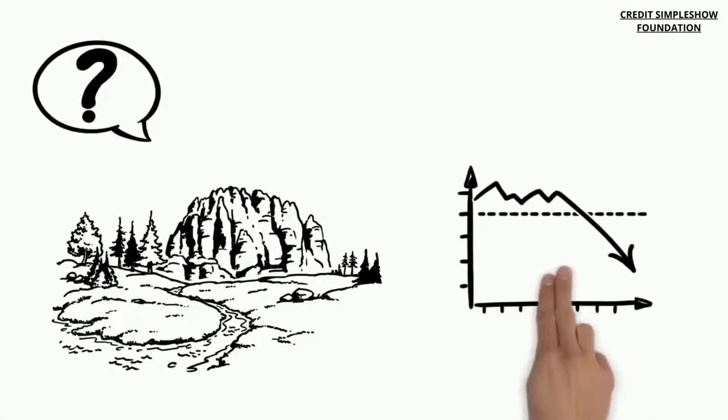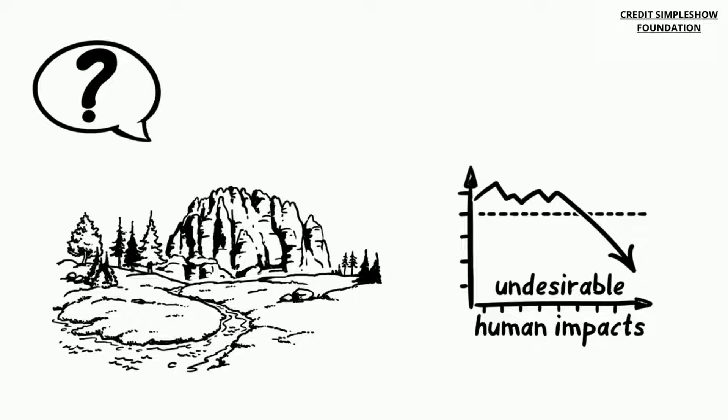So, what exactly is to be done? Nature can still be saved. Reducing undesirable human impacts may include the following.